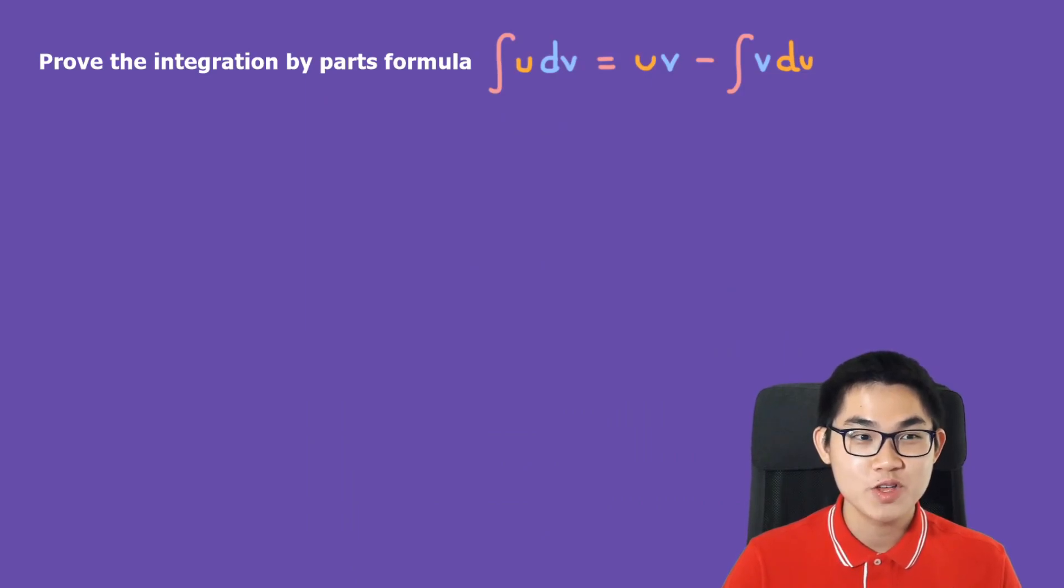In this video I'm going to show you how to prove the integration by parts formula. That formula is the integral of u dv, which equals uv minus the integral of v du.